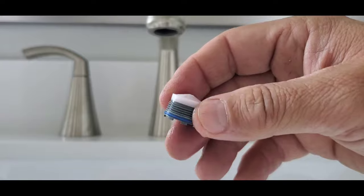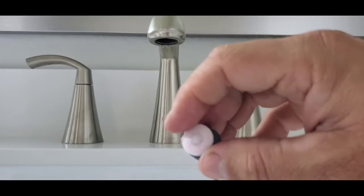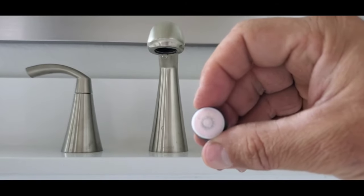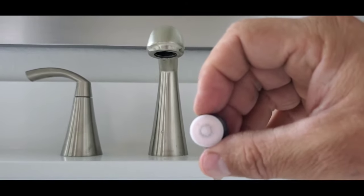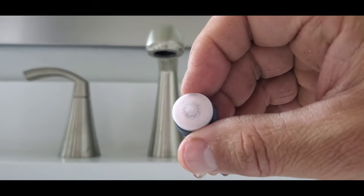So you can see the threads there. This is the screen, this part right here, this screen or mesh, that is what can become clogged, and so it will need to be cleaned or replaced.